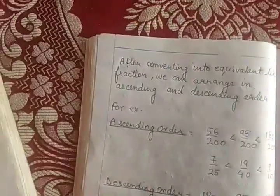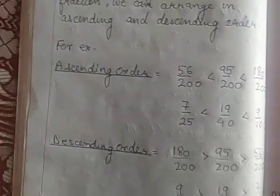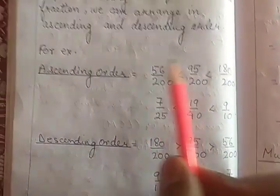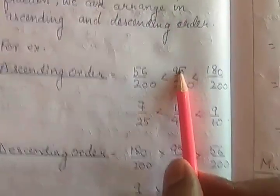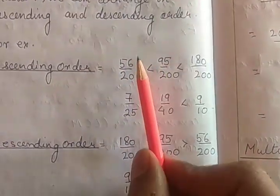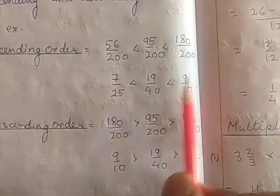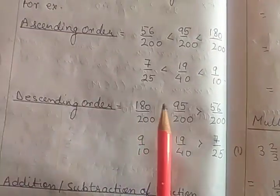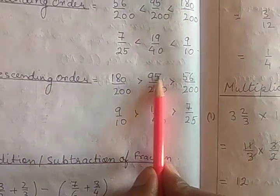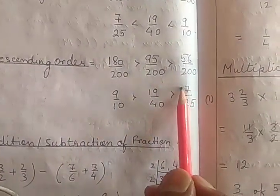After converting into equivalent like fractions, we can arrange them in ascending and descending order. When denominators are the same, it is very easy to compare. The smallest numerator comes first in ascending order — 56, then 95, then 180. In simpler form: 7 upon 25, 19 upon 40, 9 upon 10. For descending order, from highest to lowest: 180, 95, 56 — which gives 9 by 10, 19 by 40, and 7 by 25.